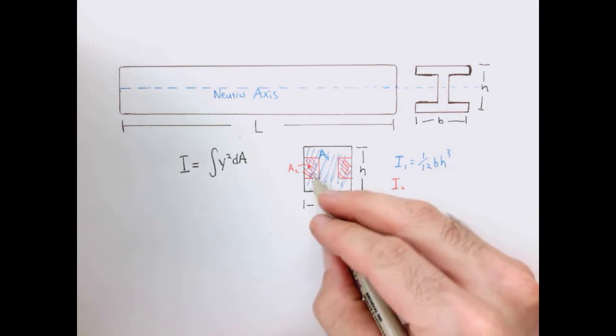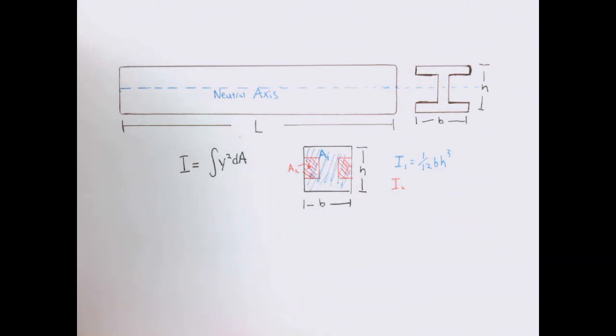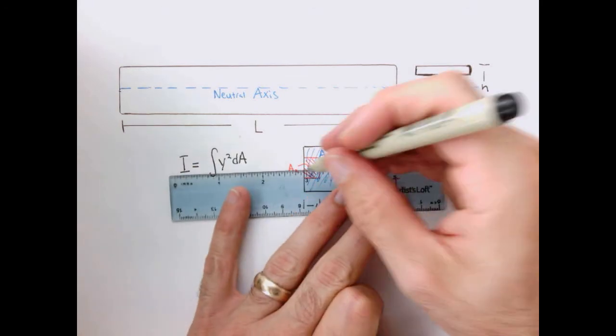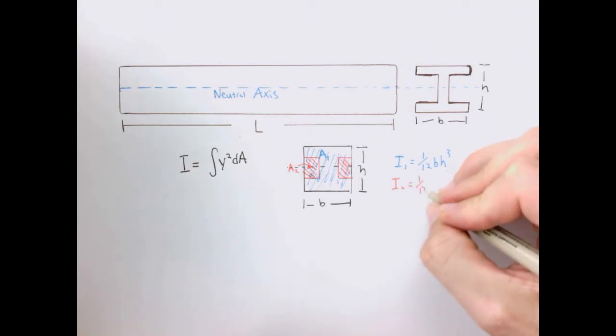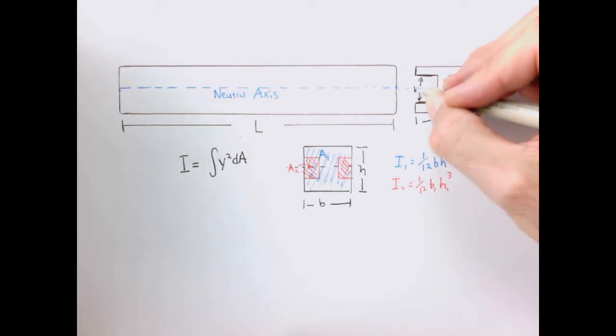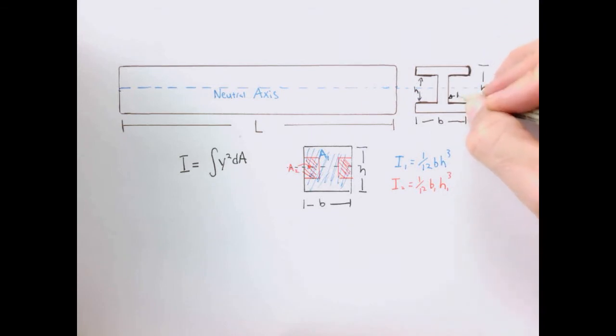Now let's look at the areas that we would want to cancel out, which are these empty spaces here. So that area we'll call A2. In this case, I2 of this moment of inertia, about its neutral axis, which again, is right here in the center. So the neutral axis in this case is right down the middle. I2 in this case, is nothing more than one-twelfth b1 h1 cubed. Where in this case, that's h1, and that's b1. So to compute the total moment of inertia of our I-beam, it's nothing more than I1 minus 2 times I2. Simple as that.